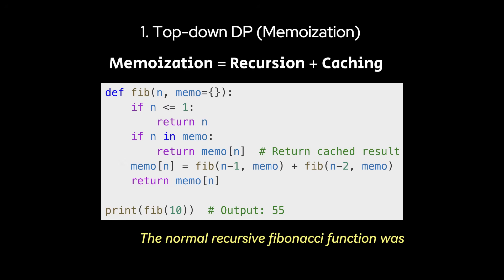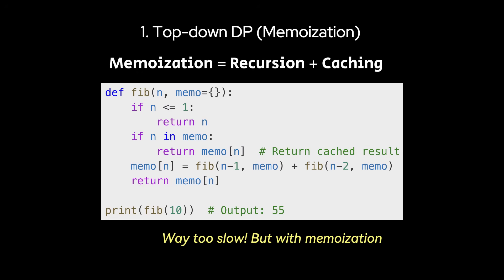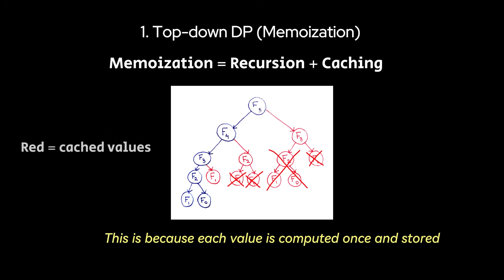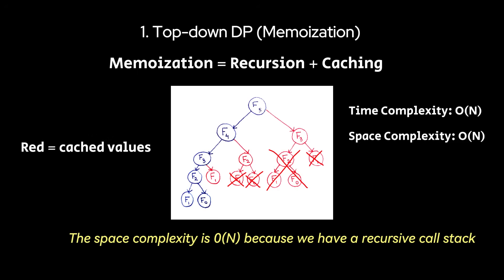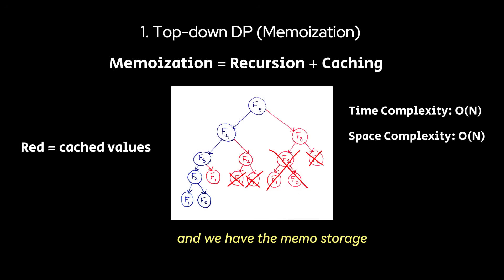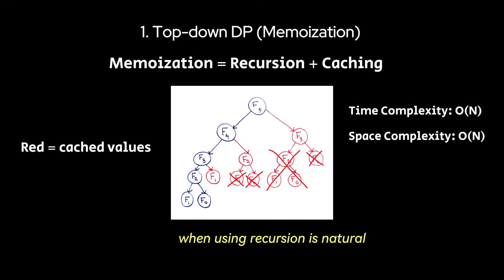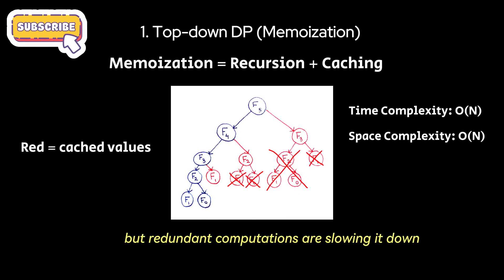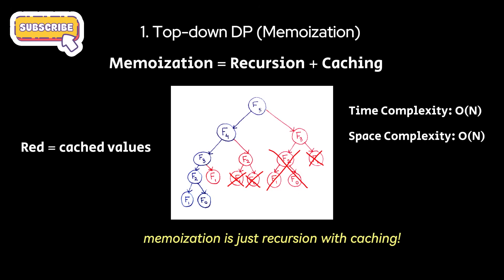The normal recursive Fibonacci function was O(2^N) exponential — way too slow. But with memoization, we reduce it to O(N), because each value is computed once and stored. The space complexity is O(N) because we have a recursive call stack and the memo storage. You want to use this top-down approach when using recursion is natural, but redundant computations are slowing it down. Remember this: memoization is just recursion with caching.